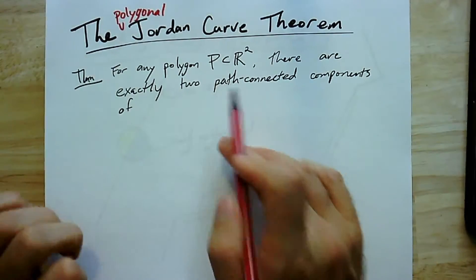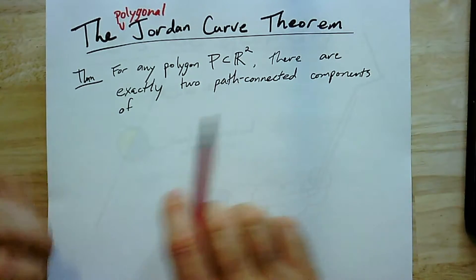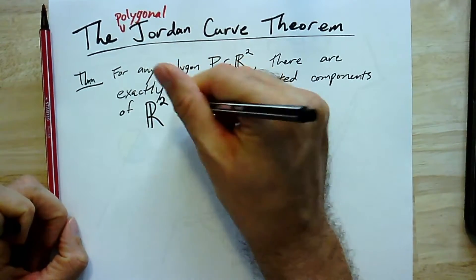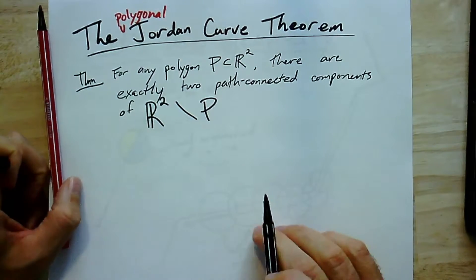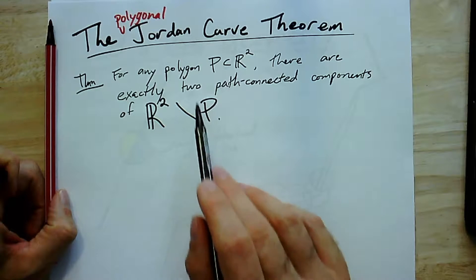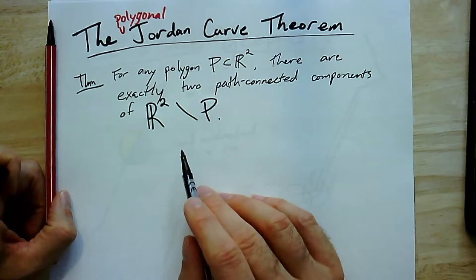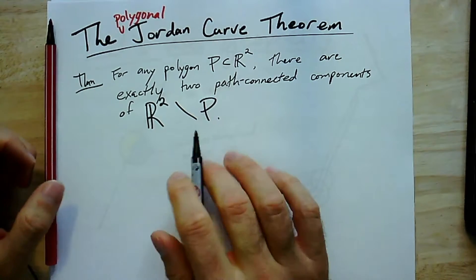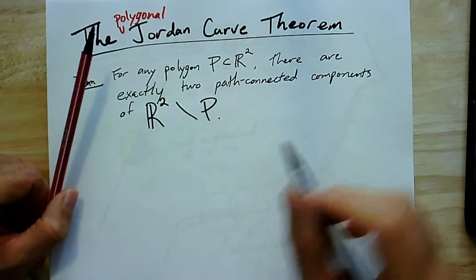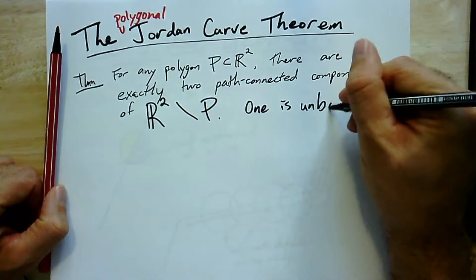The claim is that there are exactly two path-connected components of R² \ P. So again, you should think of this as I took out a big pair of scissors and I cut along the edges of the polygon and what I had left were some pieces of the plane. And how many pieces do I have? Well, if it was a polygon, I have two of them, inside and outside. And actually, the outside is well-defined because only one of them is unbounded.